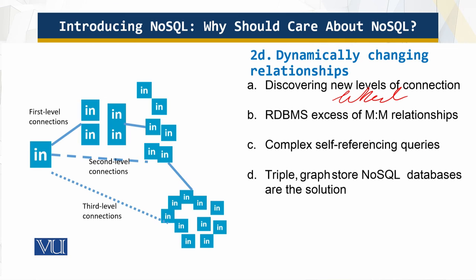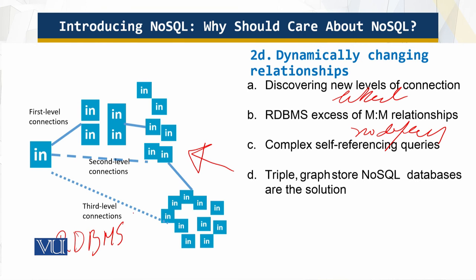And no duplicates — this is a very complex query. Triple and graph store databases address this. NoSQL databases are designed with dynamically changing relationships in mind; they use a simpler data model but at a terrific scale to ensure these questions can be answered quickly. This is not achievable easily in RDBMS — this is a NoSQL capability.